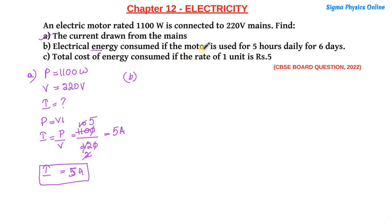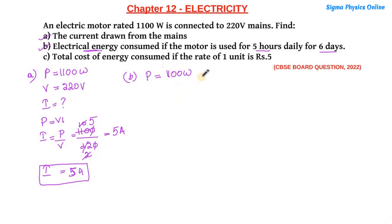Let's come to the second part: electrical energy consumed if the motor is used for five hours daily for six days. When we are talking about electrical energy, we are talking about the commercial unit of electrical energy, which is measured in kilowatt-hours or units. The power of the motor is 1100 watts. Since we are dealing with the commercial unit, we express power in kilowatts: 1100 divided by 1000 equals 1.1 kilowatts.